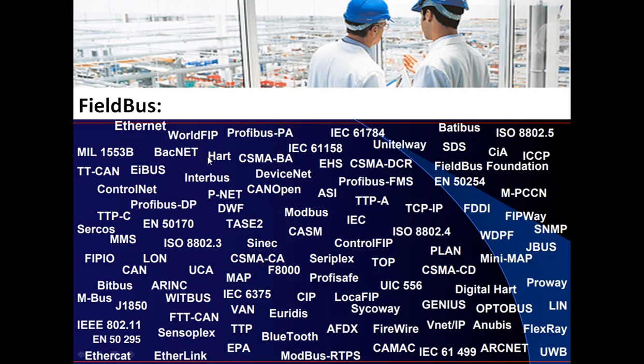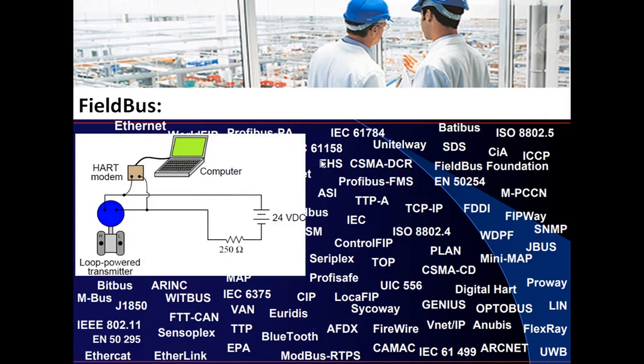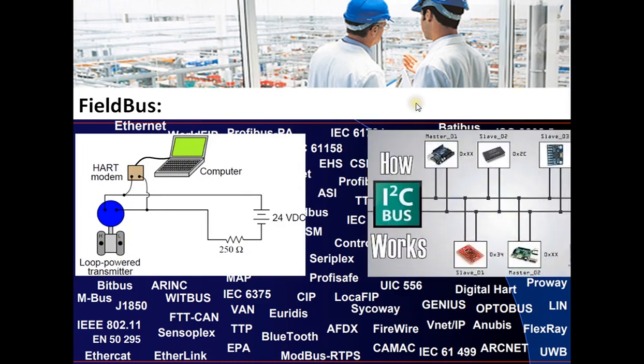Fieldbus is basically a digital communication protocol that defines a set of rules for exchanging data between sender and receiver. Here you can see some of the fieldbus protocols. In addition to these, there are many other protocols available in the market, and depending upon the application requirement, the type of fieldbus needs to be selected. For process applications, HART, Foundation Fieldbus, Profibus, Modbus, or any other protocol can be selected.